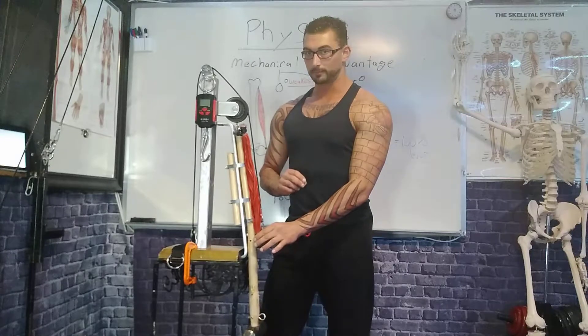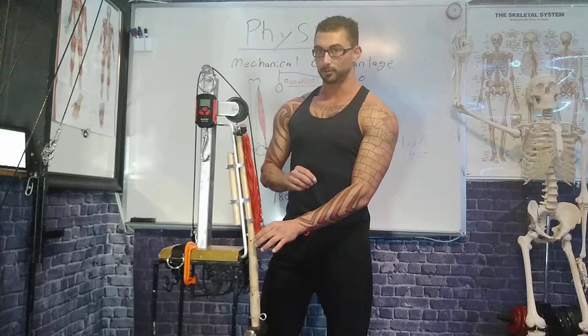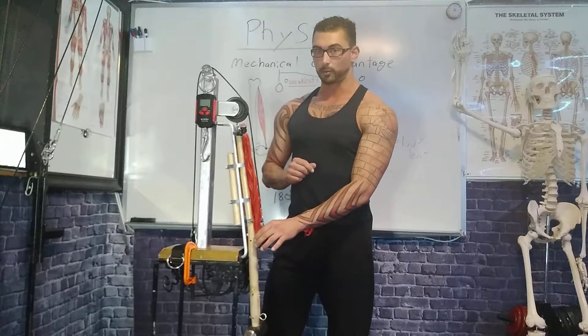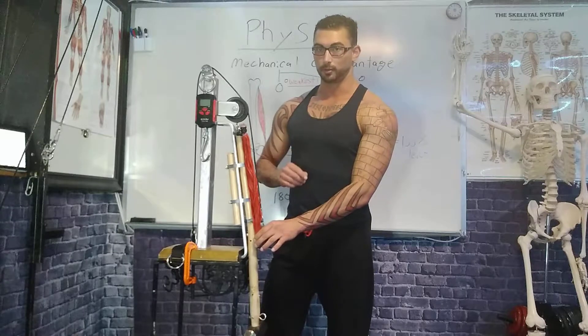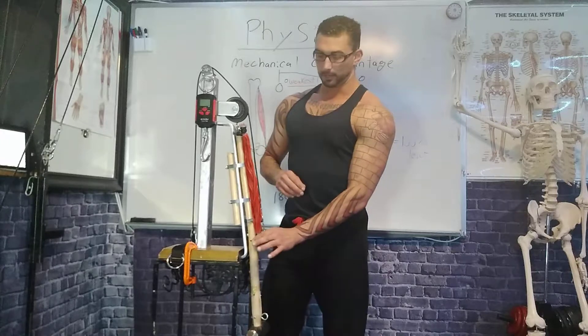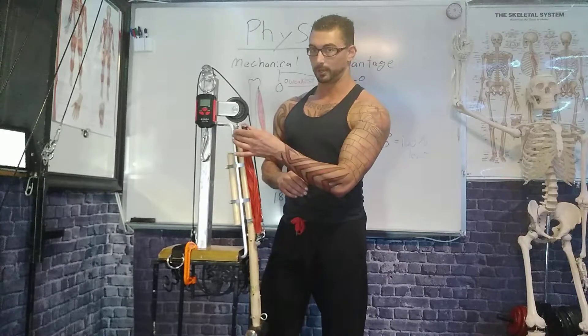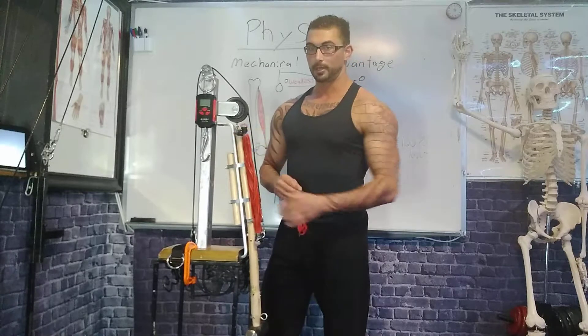The reason this is important is because people will tell you, you can train one part of the bicep more than the other. This is fiction. It is not true. It's a lie. They connect at one point, and they insert at one point. Muscles can only pull towards the origin. If I was to give you a rope to tie around your refrigerator, could you pull that refrigerator in any direction other than towards yourself?